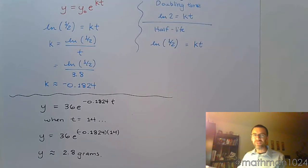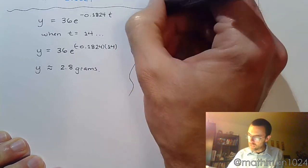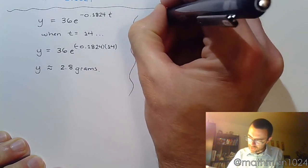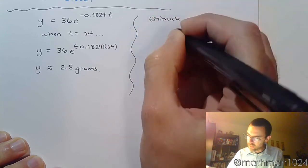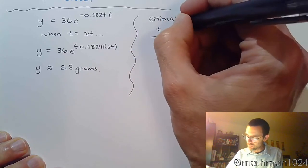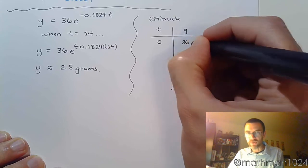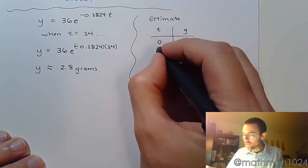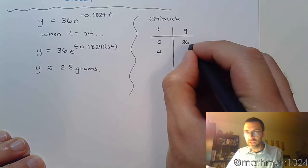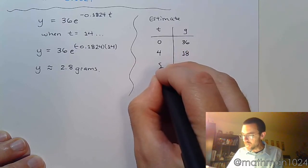So again, as we're estimating it, so as an estimate, here's what we were doing. If you look at t and how many grams did you have, when time was zero, you had 36 grams. The half-life was about four days, so I estimated four days, you're going to lose half of that, you're going to be at 18. Another four days, you're going to lose half of that, so you get nine.